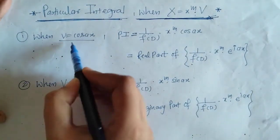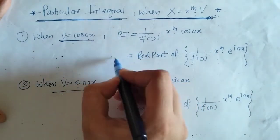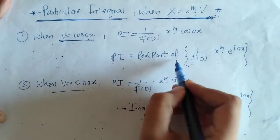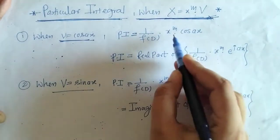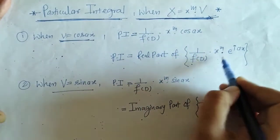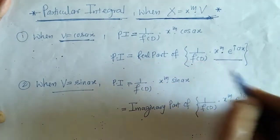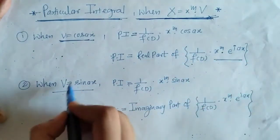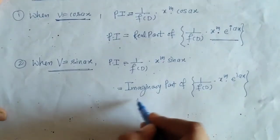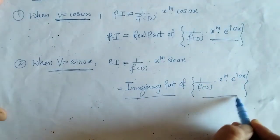We know that when v equals cos(ax), PI equals the real part of 1 upon f(D) into x raised to m times e raised to iax. And when v equals sin(ax), we take the imaginary part of this operation.